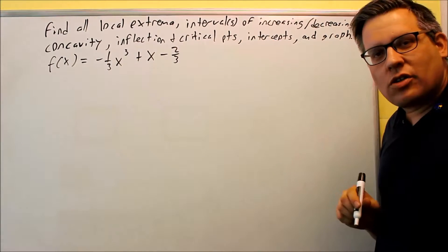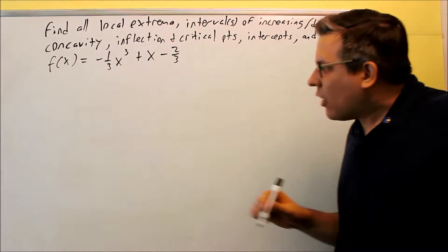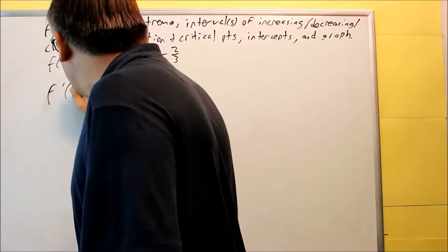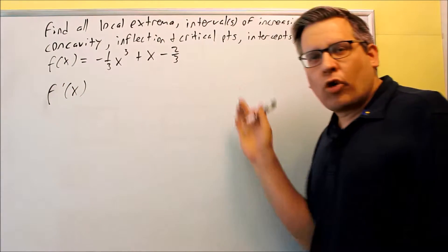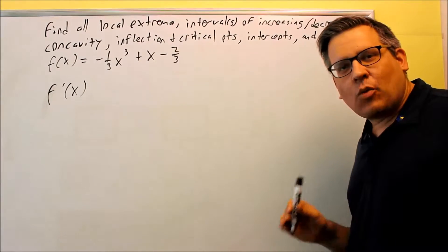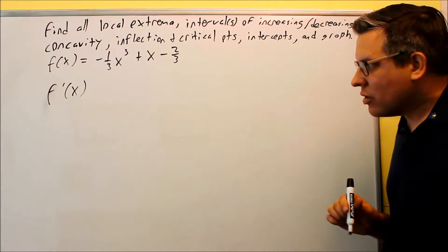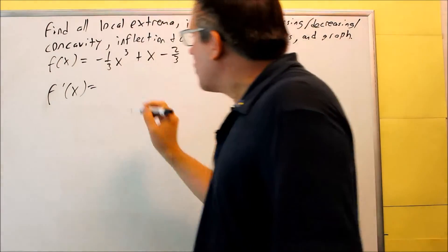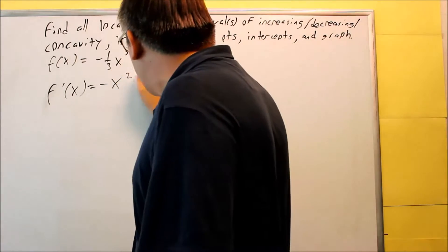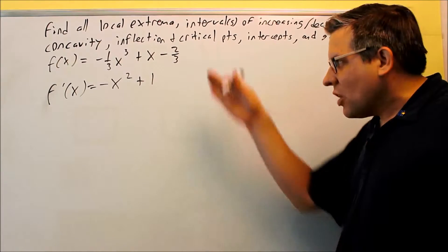To find the intervals of increasing and decreasing and critical points, we need the first derivative. For this problem we can just use the power rule. The 3 comes down and multiplies by the negative one-third, giving negative x squared plus 1, and then the derivative of negative two-thirds is 0. That's the first derivative.